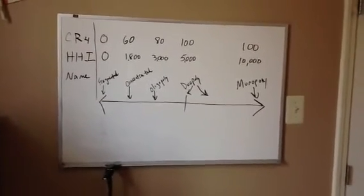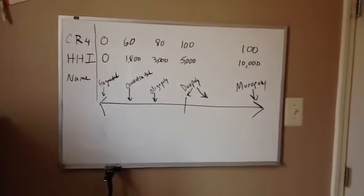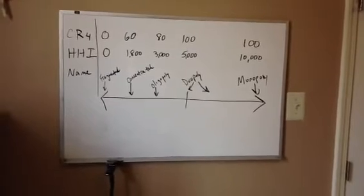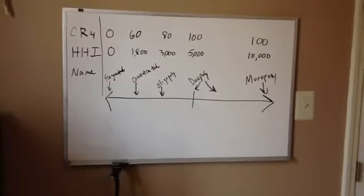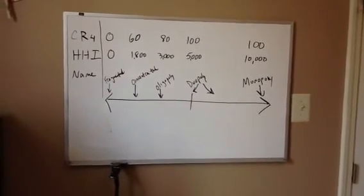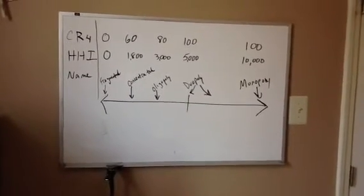The Herfindahl level is the market share squared and then added, and so you can see other videos on how to actually determine what a Herfindahl level is. But we know that the Herfindahl goes from zero to 10,000. And then finally we have the name that we're going to give the industry structure.